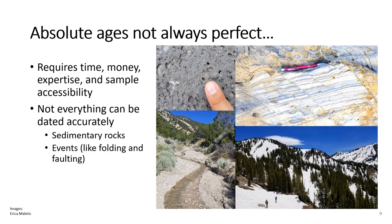Although having absolute ages for everything would be ideal, radiometric dating isn't perfect. Analyzing samples requires a lot of time, money, and people with the proper training to run the instruments. Samples might also be completely inaccessible. Not everything can be dated accurately — sedimentary rocks in particular can't be dated this way since they're made of rocks that had formed long before the sedimentary rock formation existed. Different events like folding or faulting of rocks also can't be dated this way.